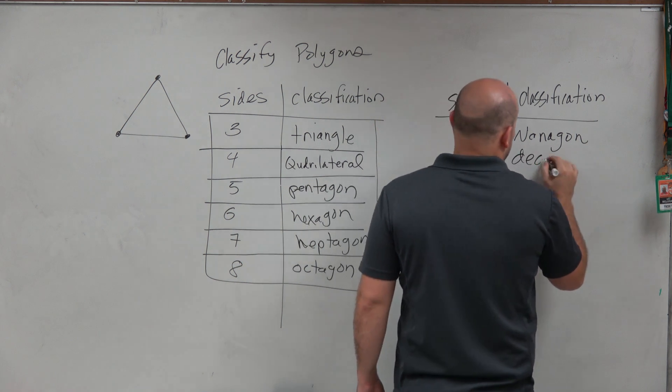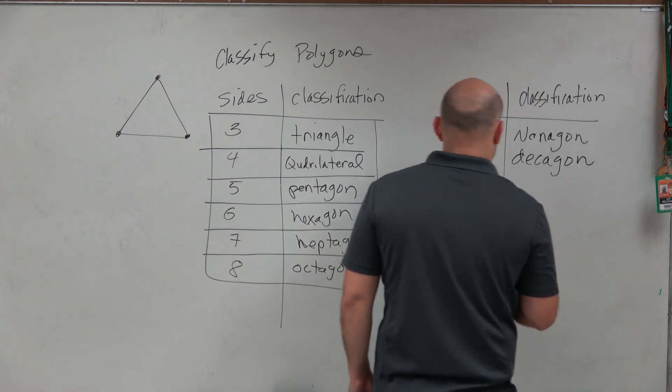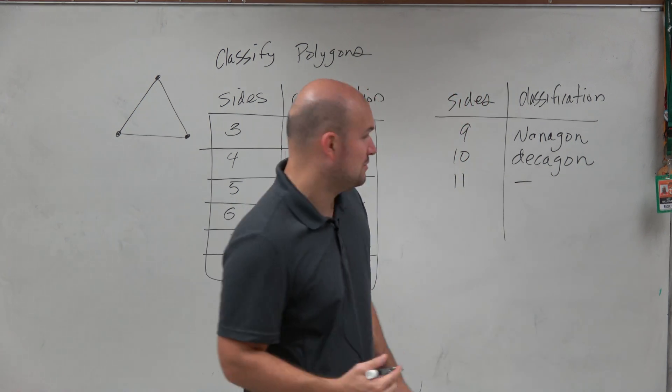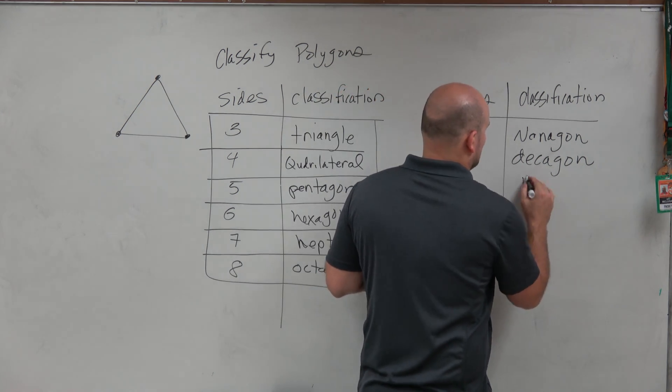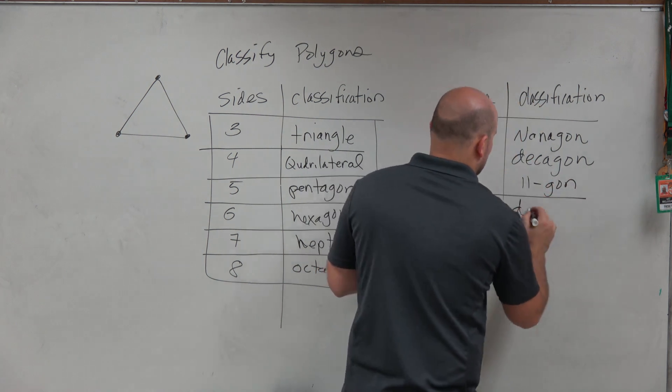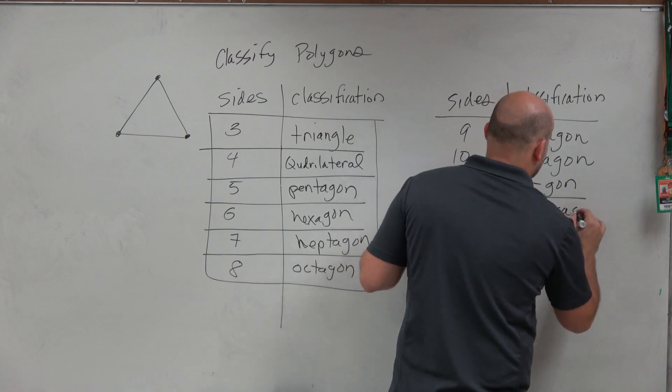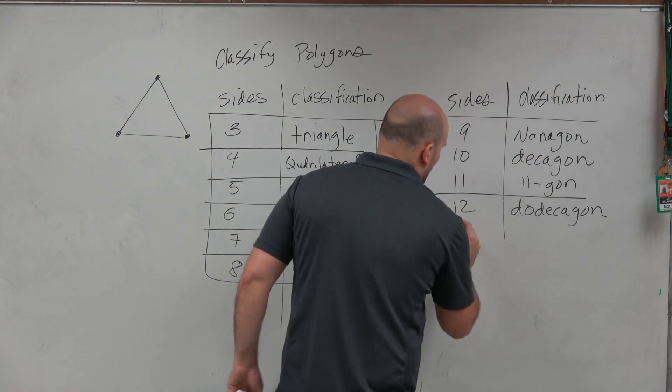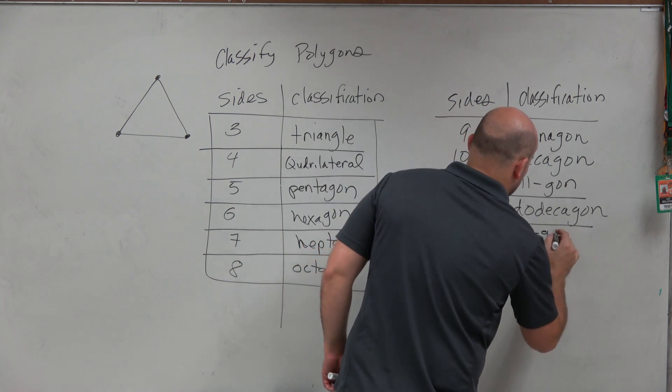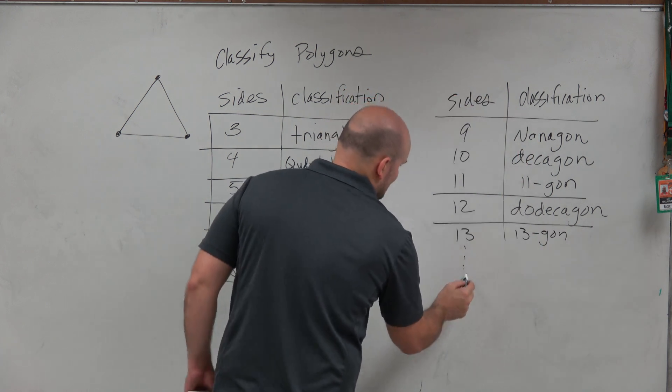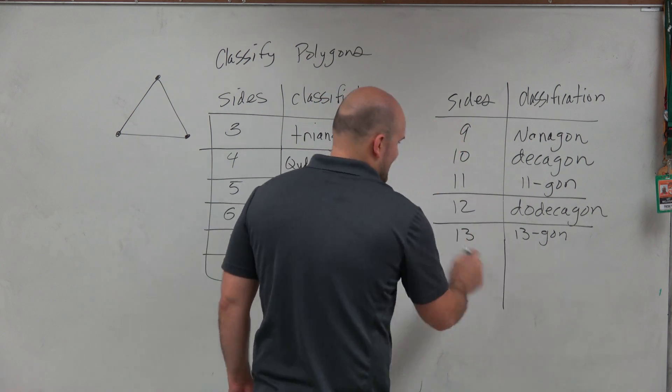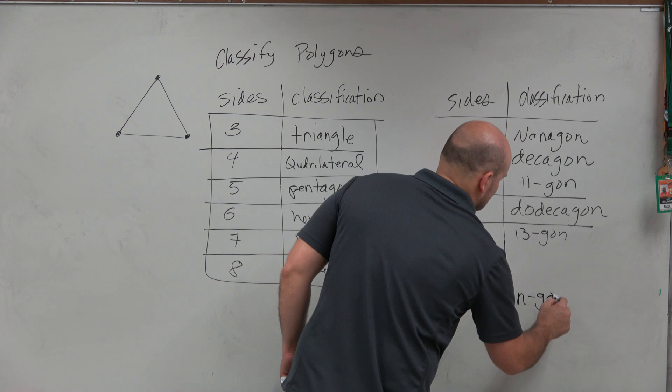Ten is we have our decagon. For eleven, we'll call that an 11-gon. For twelve, we have a dodecagon. For thirteen, we'll have a 13-gon. And then for anything else that's larger than twelve, we're just going to call that an n-gon.